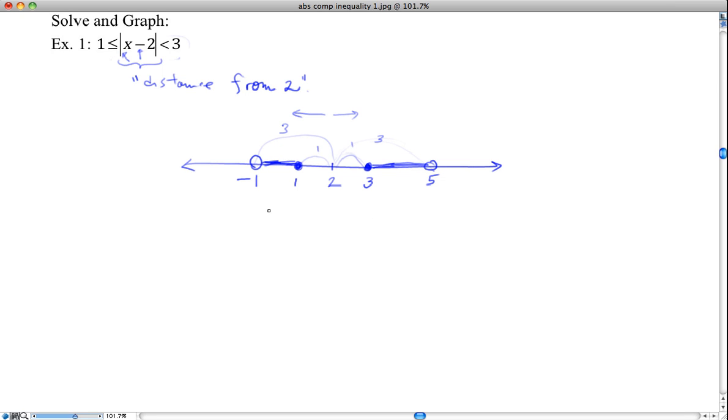So if we're to state that in a set notation, negative 1 is less than x, which is less than or equal to 1, because there's a gap in the middle. We'll say, or 3 is less than or equal to x less than 5, and we're done.